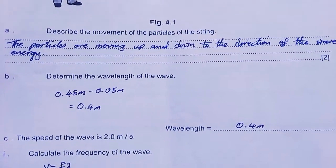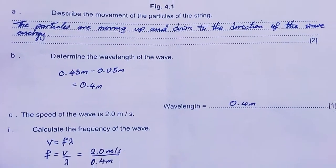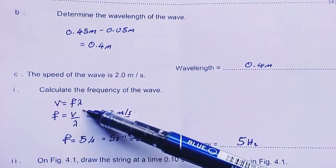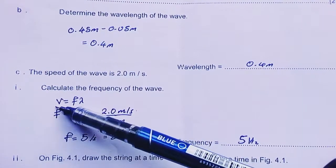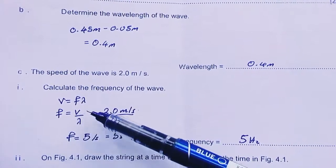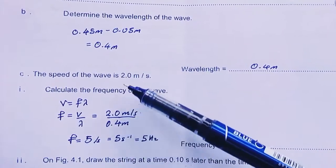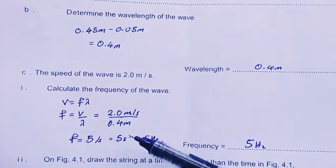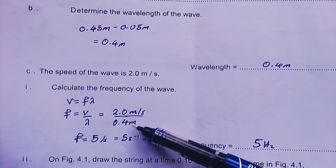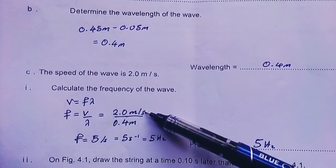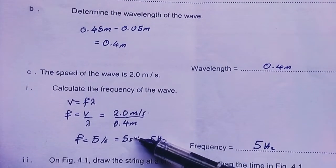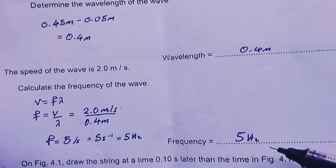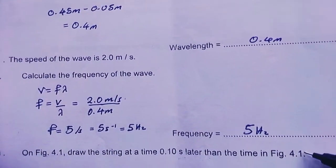The speed of the wave is 2 meters per second. Calculate the frequency of the wave. I use the wave equation where velocity equals frequency times lambda, which is wavelength. I make frequency the subject, which gives me velocity over wavelength. The velocity is given, the wavelength comes from your calculations. When you do your divisions, the SI unit for frequency is actually hertz. So our answer here is five hertz.